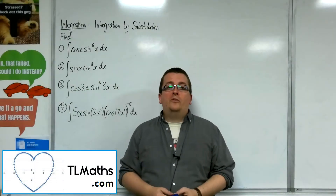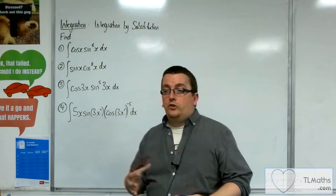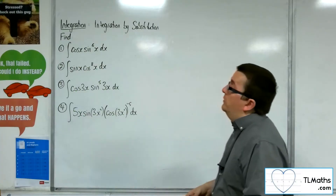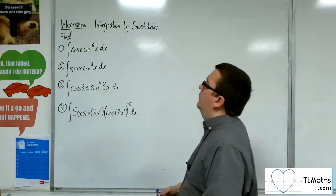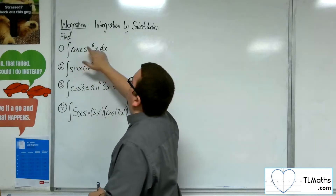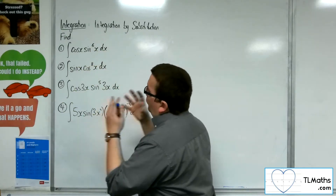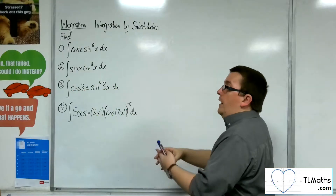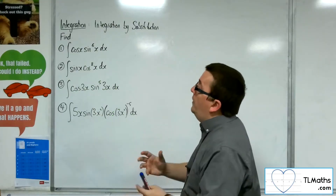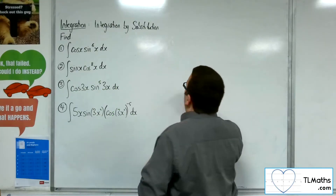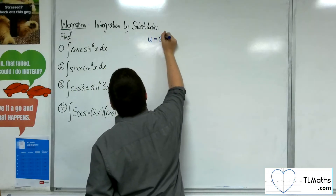In this video, I'm going to go through some examples of integration by substitution with trigonometry involved. So let's have a look at number one. We've got cosine of x times sine to the 6x dx. So you want to make your substitution the part that is causing the problem, and that is the sine of x. So we're going to have u equals sine of x.